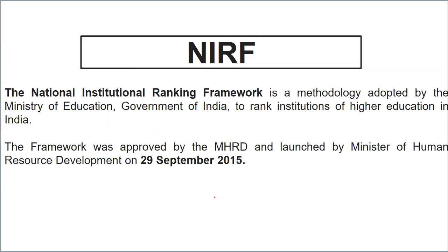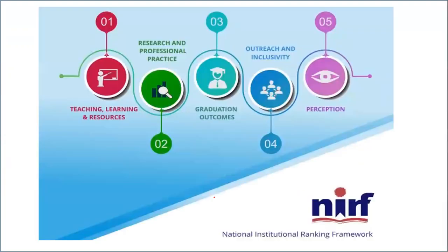The National Institute Ranking Framework (NIRF) is the methodology adopted by the Ministry of Education to rank institutions of higher education. It was approved by the Ministry of Human Resource Development on 29th September 2015. The NIRF framework has five parameters: teaching and learning resources, research and professional practice, graduation outcomes, outreach and inclusivity, and perception. Regarding UGC Sections 2F and 12B: colleges under 2F are brought under the purview of UGC regulation. Colleges under 12B are eligible for central assistance from the Government of India and receive central funds from the central government.